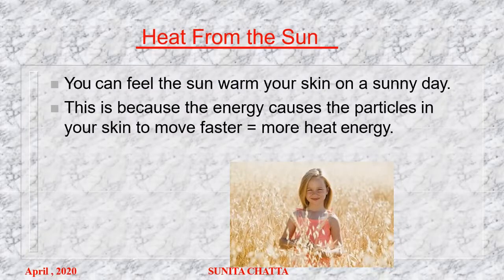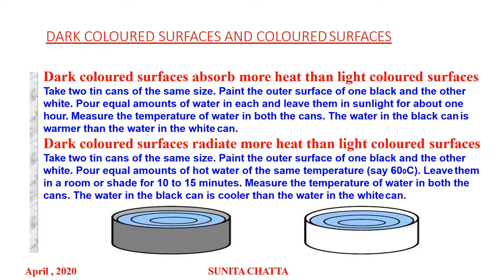Heat from the sun — you feel the sun warm on your skin on a sunny day. This is because the heat energy causes the particles in your skin to move faster. Dark colored surfaces absorb more heat than light colored surfaces. We can prove this by an experiment: take two tin cans of the same size, paint the outer surface of one black and the other white, pour equal amounts of water in each and leave them in sunlight for one hour. The water in the black can will be warmer than the water in the white can.